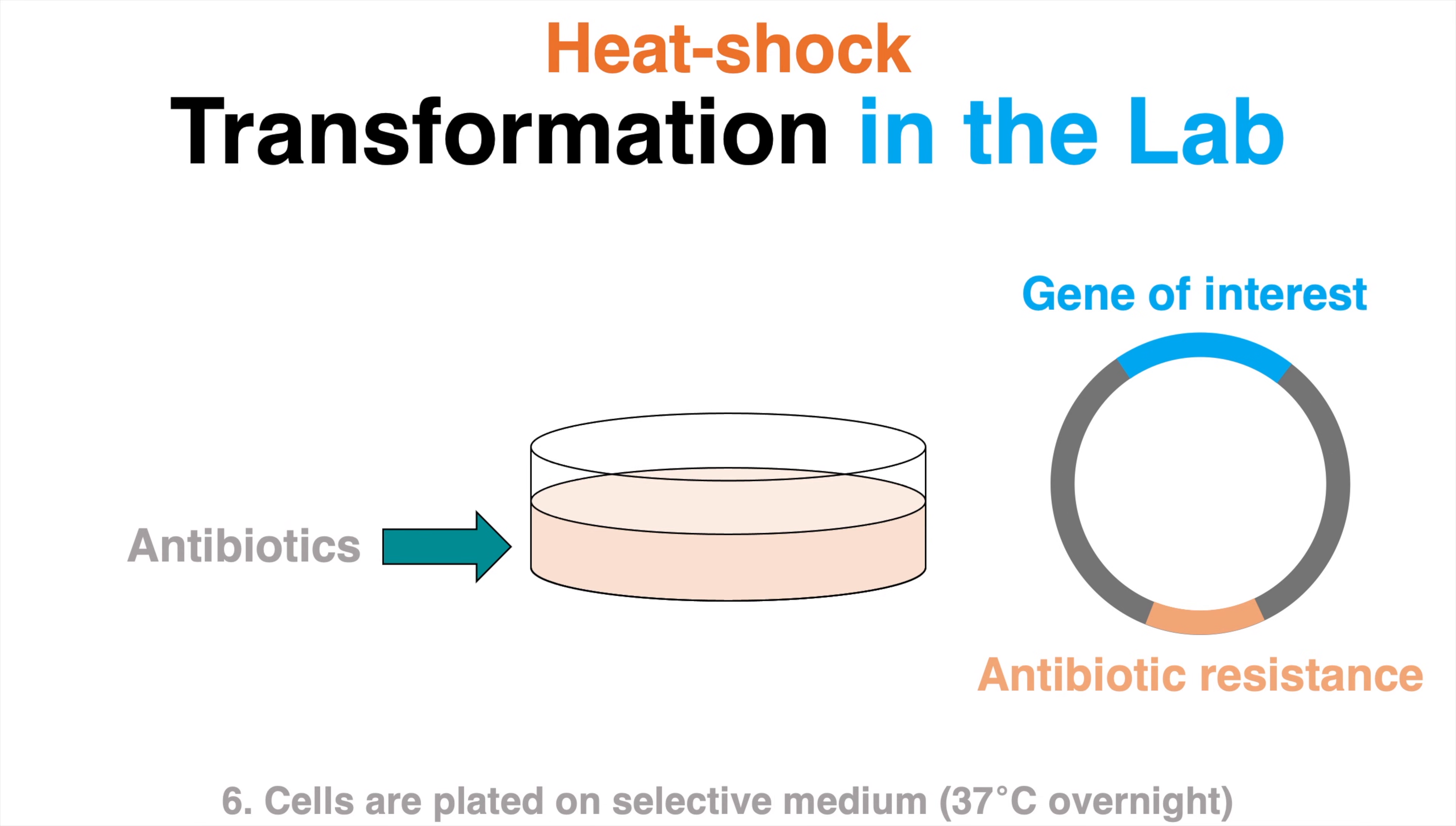Only bacterial cells successfully transformed with these plasmids can thus grow on the plates.